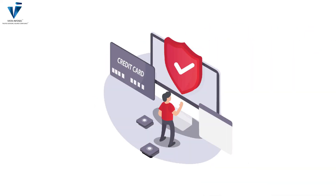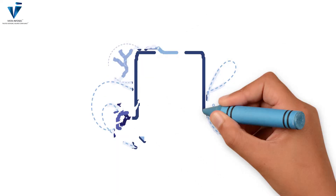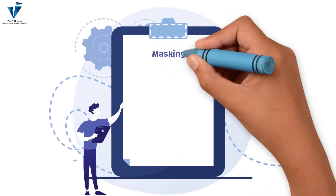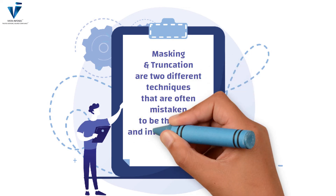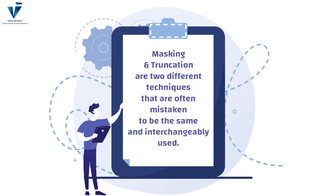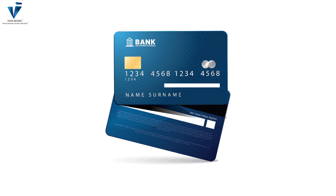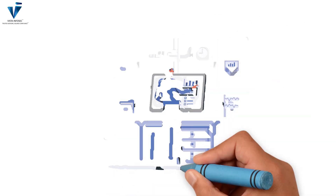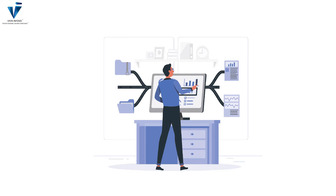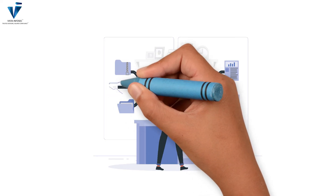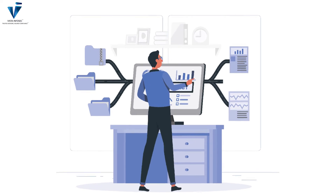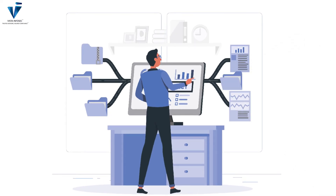Masking and truncation are both techniques that are often mistaken to be the same and quite often used interchangeably. But while masking conceals certain digits when displayed, truncation means removing certain digits permanently — data that cannot be retrieved. So in masking, the PAN data can be unmasked and the data can be retrieved, whereas in truncation the PAN data cannot be restored without recreating the PAN from another source.